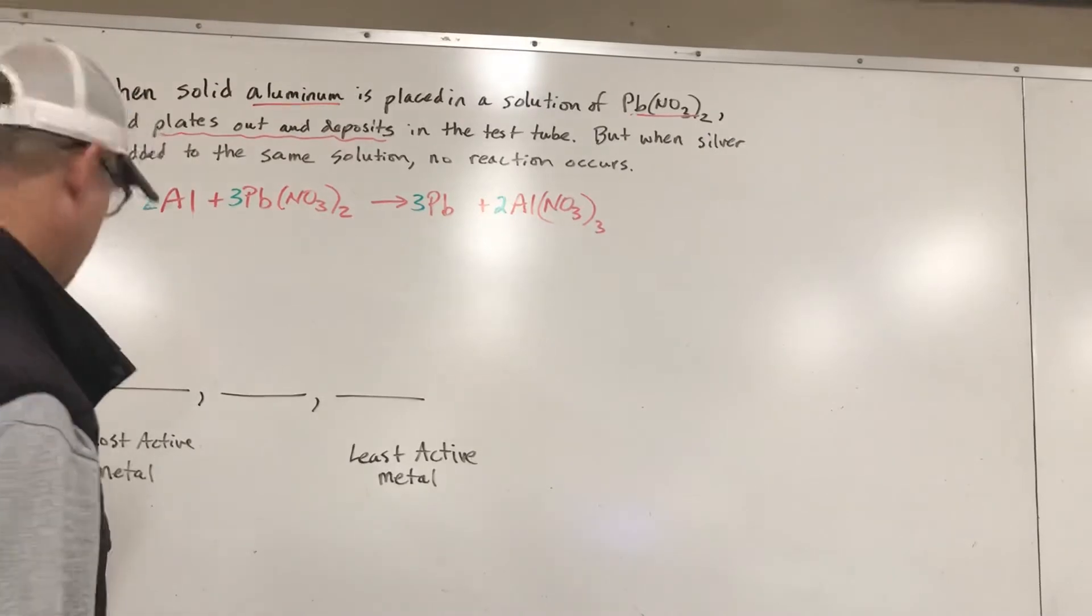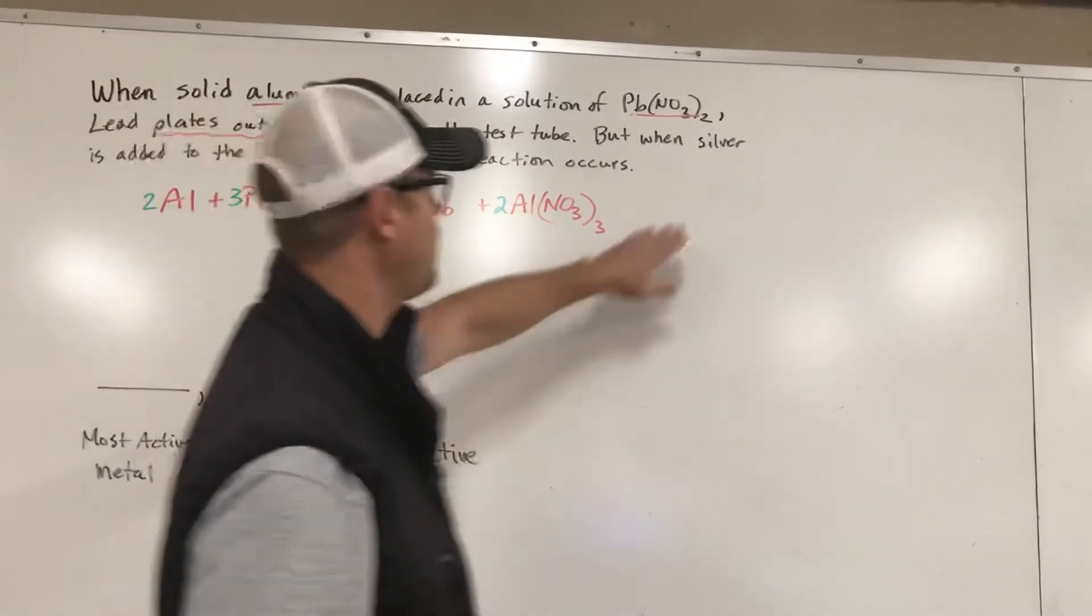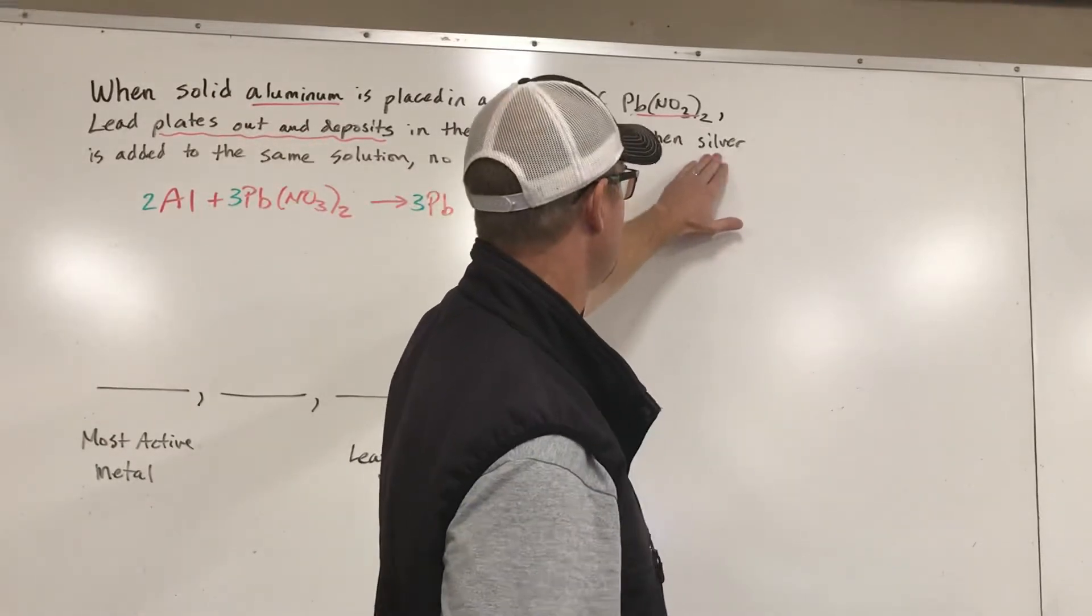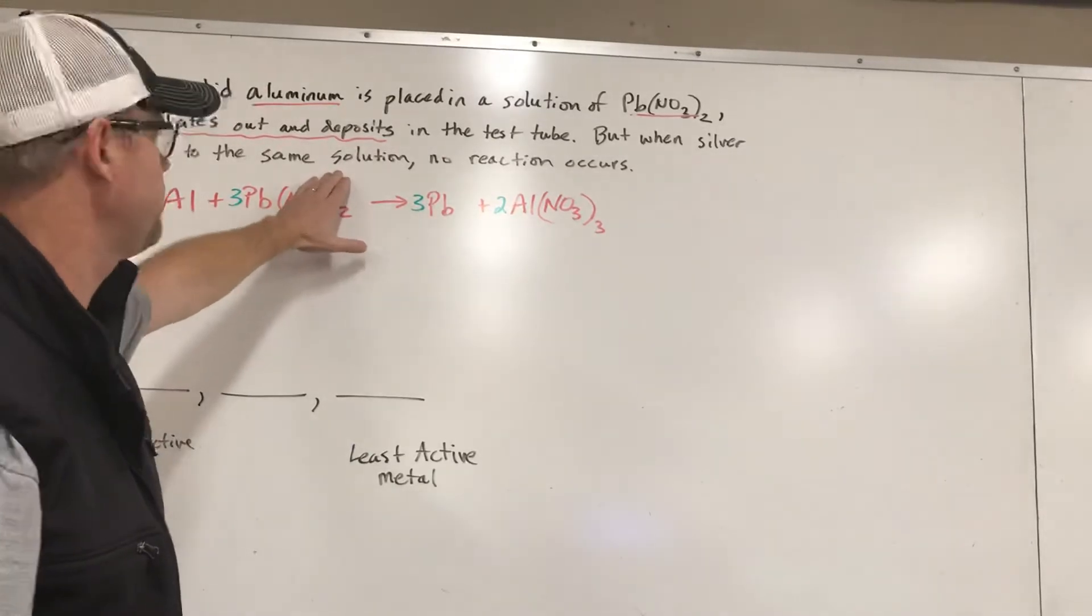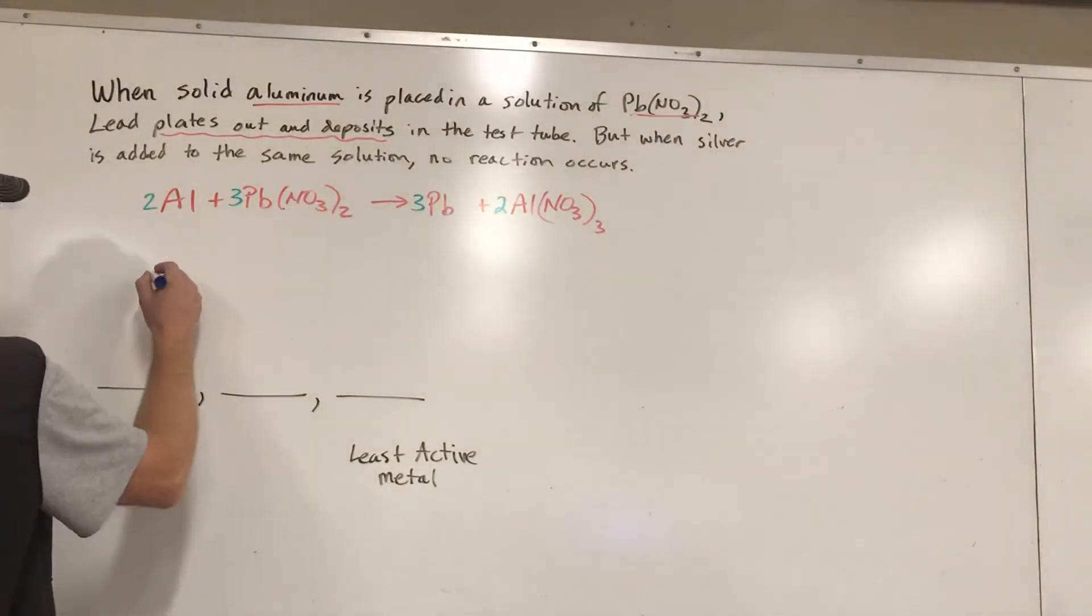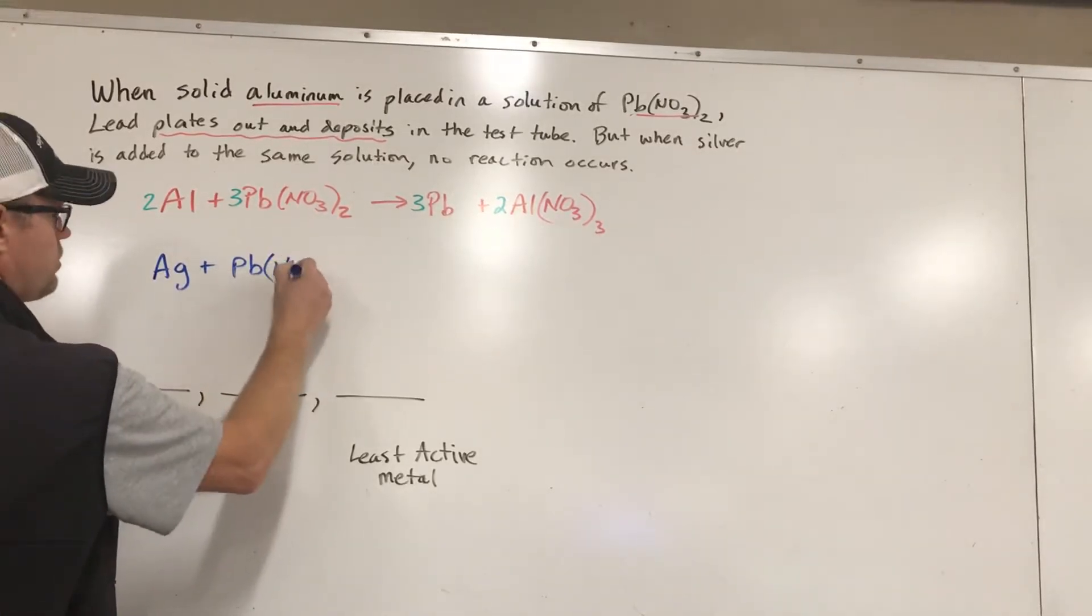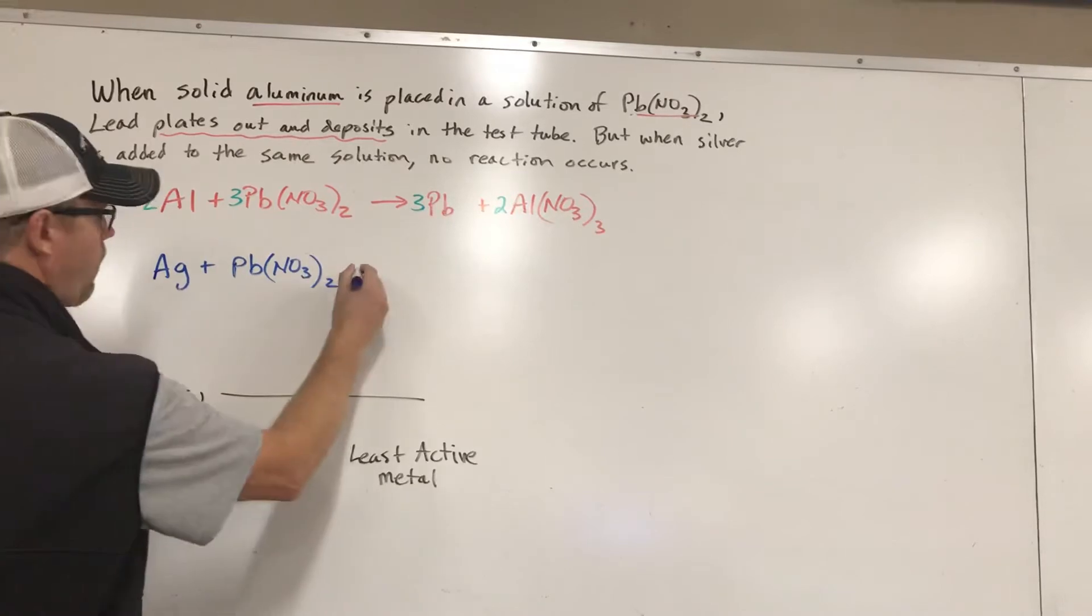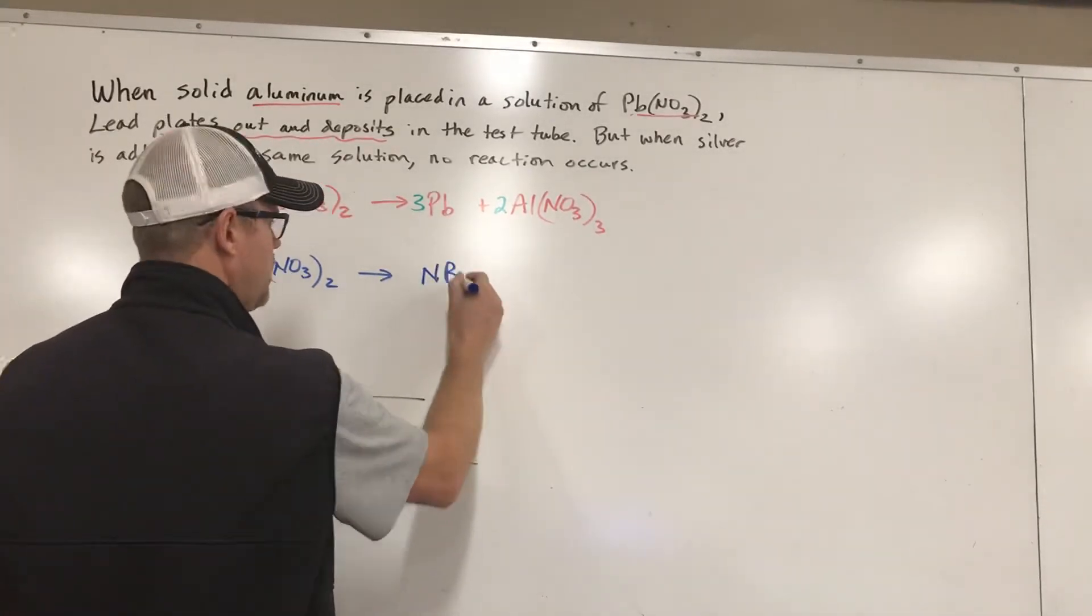Now, let's take a look at the second situation. The second situation says we try silver with the same thing. So silver put in a solution of lead nitrate. When we do that, we don't visibly see anything happen. So I'm going to write what happens. Silver plus lead nitrate. And we don't see anything happen. So there's no reason to write a balanced equation for a reaction that we don't visibly see actually occur. So we're just going to say there's no reaction here.